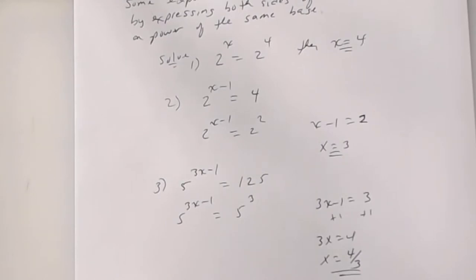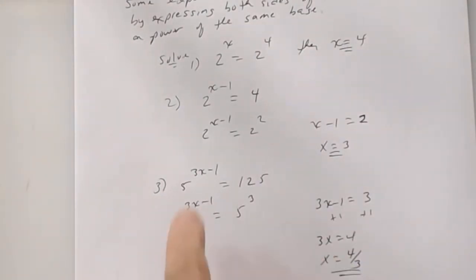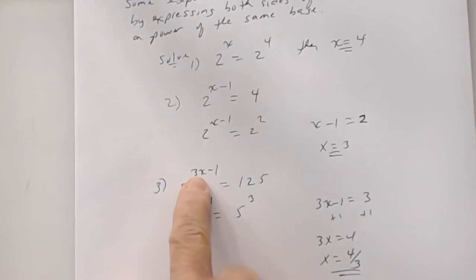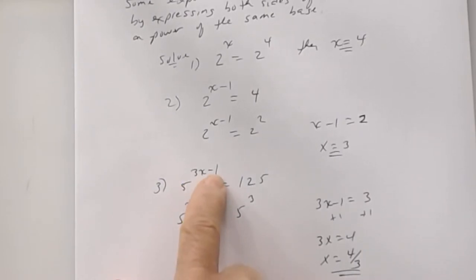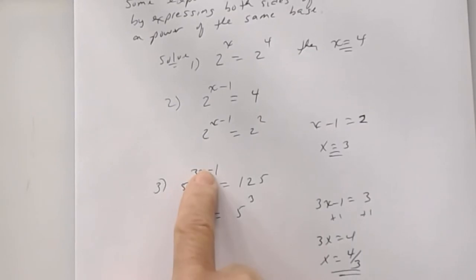You can always check yourself — go back to the original. If x is 4 thirds, what's 3 times 4 thirds? 4. What's 4 minus 1? 3. What's 5 to the third? 125. Correct.